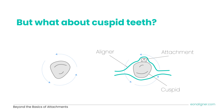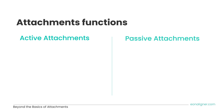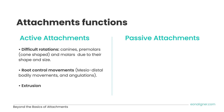Attachments can be classified into two categories according to function: active or passive. Active attachments are used to achieve difficult movements. Examples include difficult rotations of canines, premolars, and molars due to their shape and size; root control movements needed in mesiodistal bodily movements and tooth angulations. Since aligners cover only the crown part of the tooth, an attachment is needed to create a counterbalancing force to control root movement, minimize tipping, and assist with extrusion movements.